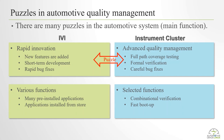IVI has various functions — many pre-installed applications and applications installed from stores. On the other hand, the instrument cluster has selected functions, because these functions require combinatorial verification and fast boot-up. We want to integrate these two systems into one system.